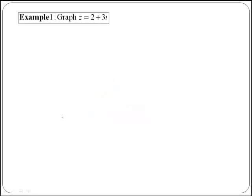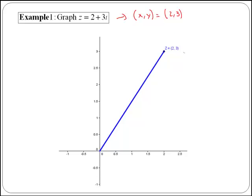Let's do the following example: Graph z = 2 + 3i. We plot the point (x, y) = (2, 3), and therefore you can see our complex number is in the first quadrant.